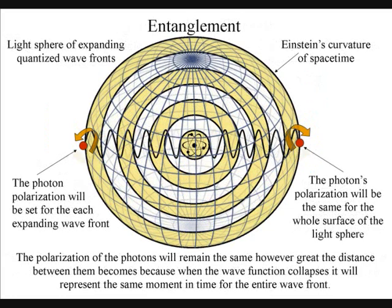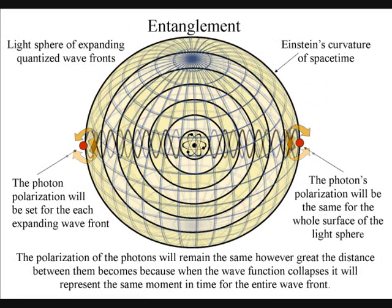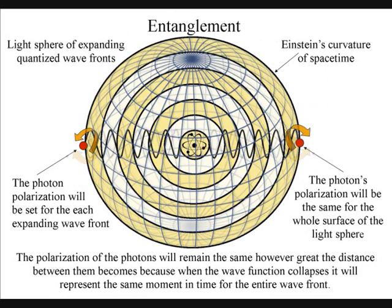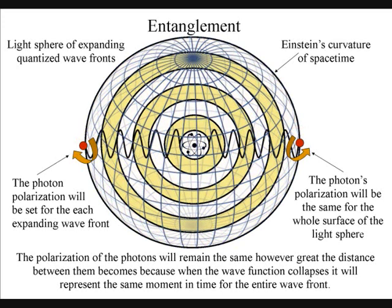The polarization of the light will be the same for the entire surface of the light sphere, creating quantum entanglement and the symmetry and geometry of space-time.